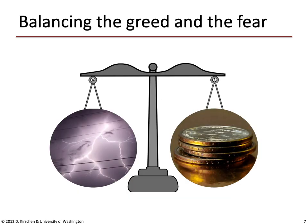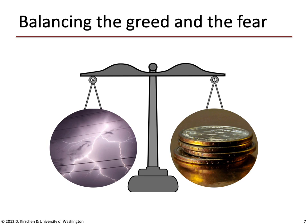So power system economics has traditionally been a problem of balancing money and reliability — or what I like to call balancing the greed and the fear. We can model this as a mathematical optimization problem, where we minimize cost or maximize profit, and treat reliability through constraints on the optimization problem. We could also try to do explicit costing of reliability, expressing it in terms of money, but that is a rather controversial approach.